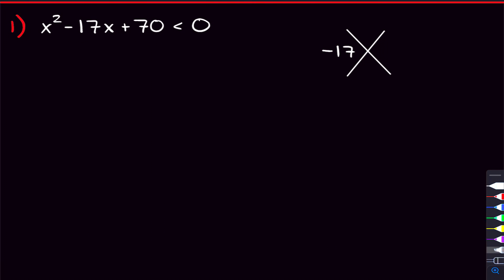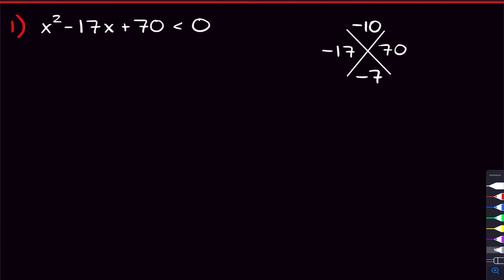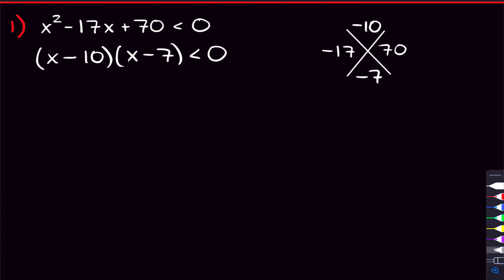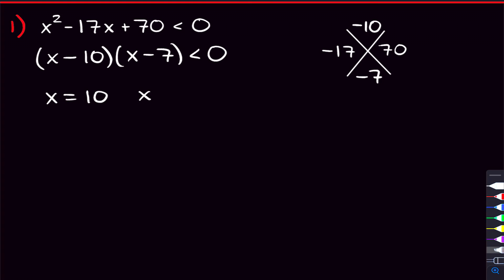So what are those two numbers going to be? When I think of two numbers that multiply to be 70, the first thing that comes to mind is 10 and seven. And if we use negative 10 and negative seven, those two numbers will also add to be negative 17. So those are going to be my two factors: x minus 10 and x minus seven. And we have that that's less than zero. So the zeros we're going to end up getting here would be x equals 10 and x equals seven.